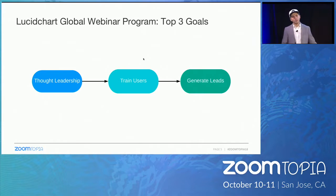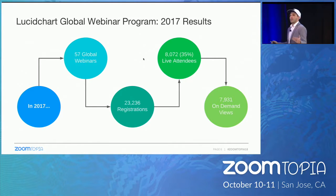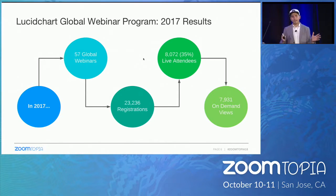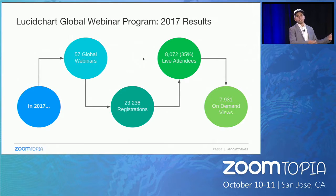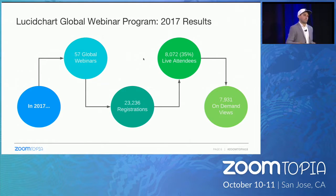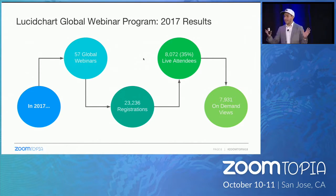Fast-forward two and a half years — here's what our program achieved. In 2017, we launched 57 webinars over 12 months. We got around 23,000 registrations — people who came to our website and said 'I want to attend.' Out of those, around 8,000 actually attended. After each webinar, we put the recording behind a gate on a specific website, and 7,000 people watched on demand — all in the year 2017.